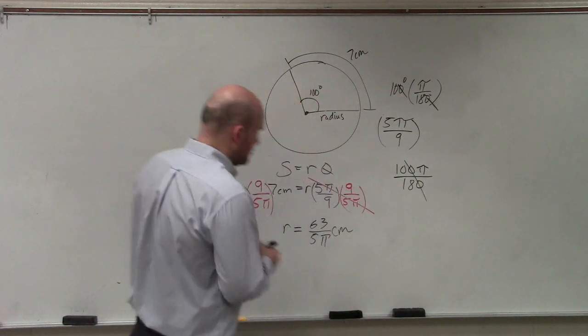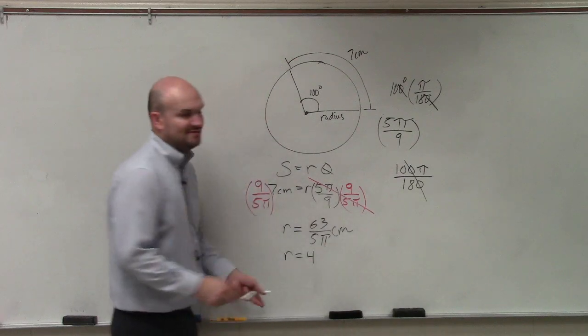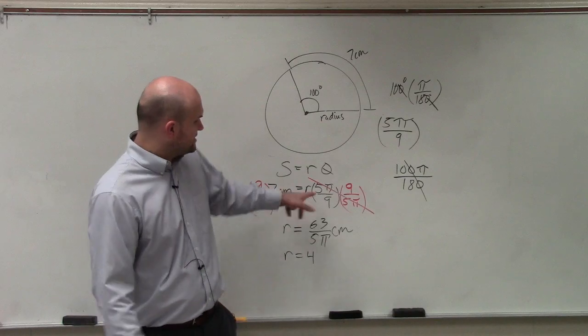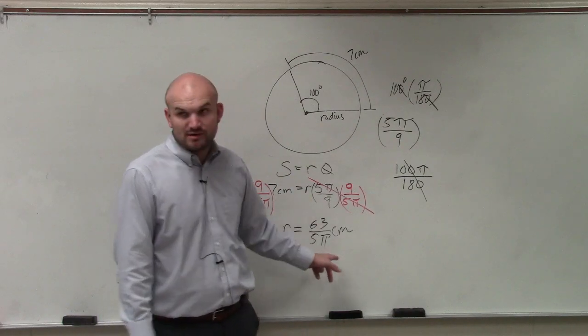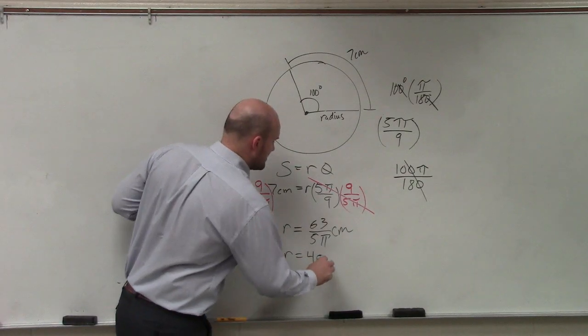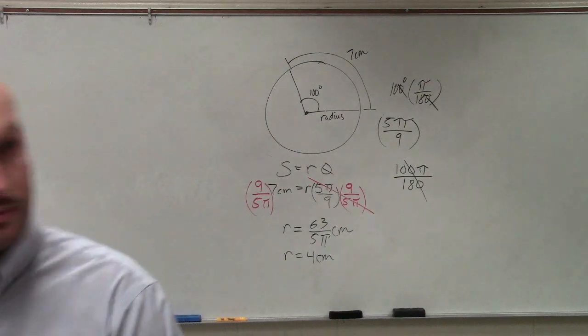So the closest centimeter, well, 5 times pi gave me 15.70. 63 divided by 15 rounds around 4. Oh, yeah. OK. Does that make sense? Does everybody follow me? No? Yes?